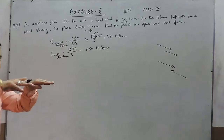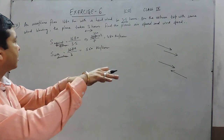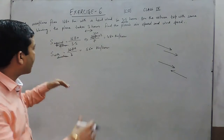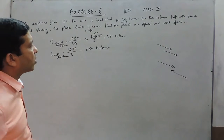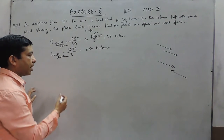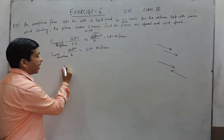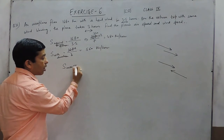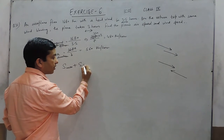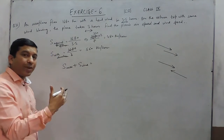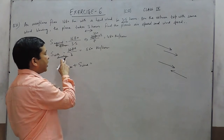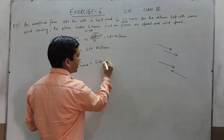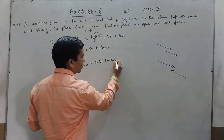It means when it is going with the direction of the wind then it is 560 km per hour, and when it is going against the direction of the wind it is 480 km per hour. Now with the direction of the wind, it is the speed of the wind which has to be added, and because we know the speed with wind is 560, so this comes out to be 560 km per hour.